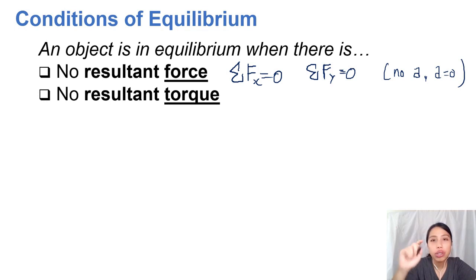Then the second condition is no resultant torque. Now we have looked at a lot of torque in the previous video. Torque is just clockwise, anticlockwise, so you don't have x and y. But basically, your net torque is zero.